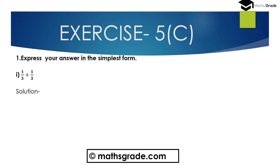Now question number 1: express your answer in the simplest form. First bit: 1 divided by 3 plus 1 divided by 3. Here both are like fractions having equal denominator. When we add two fractions having equal denominator, just add the numerators and divide by the common denominator. So the addition of this fraction is the sum of the numerators.